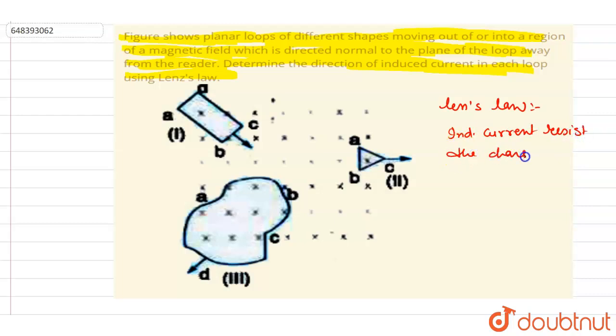So let's see in what direction the change in flux is. If you see in all the three loops the flux is inward. Now let's see what is happening, whether the flux is increasing or decreasing. Here the flux is increasing, decreasing, and decreasing.